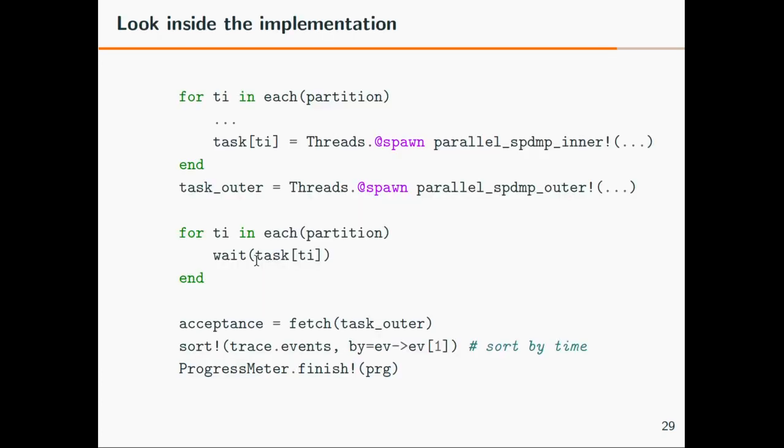If you look inside the implementation, for each of these sub-pictures, for each element of the partition, I am spawning an inner loop which does the zigzag sampler on each of the coordinates until it runs into a conflict. Then there is an outer task which takes care of stitching things together and telling the inner loops if they can continue or if they have to wait. This is a managing instance for these inner loops.